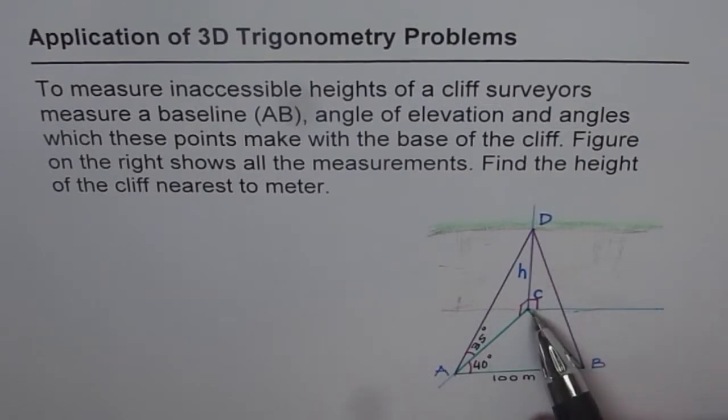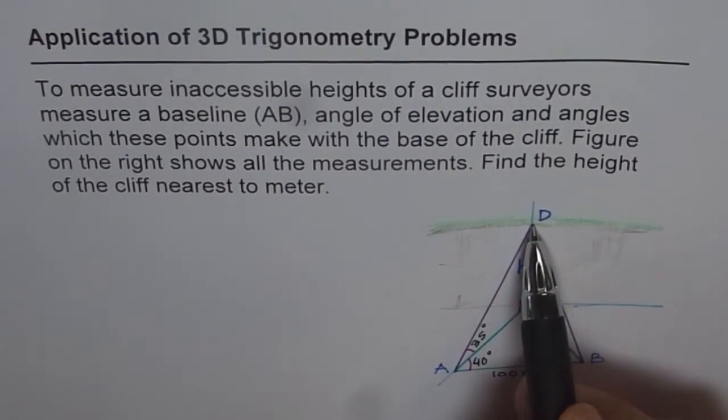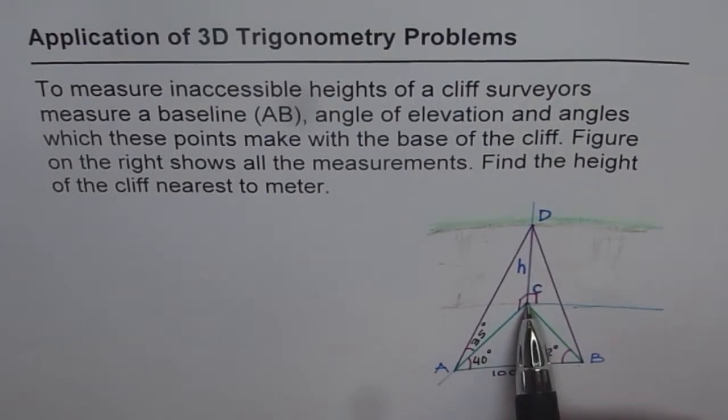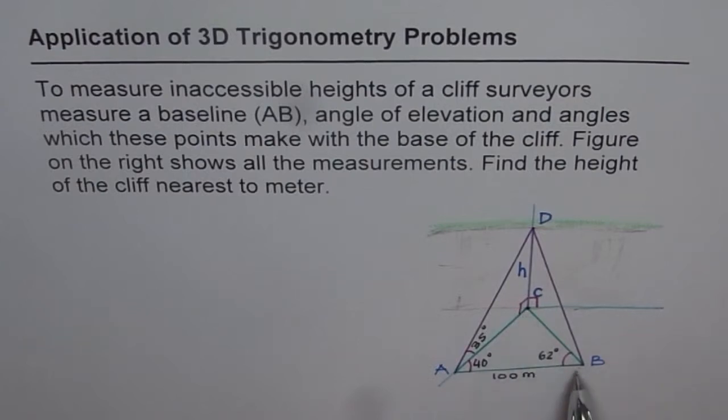So we need to find the height CD of the cliff. What we know about this situation is that two points are selected on the ground. You can always measure the distance between the two points. In this case, it is 100 meters. Then if you need to find the height of a cliff, then look at a point which is vertically down on the ground for the cliff. And from these two points, find the angle which it makes with the baseline. So those angles are given here as 40 degrees and 62 degrees. So we do these measurements.